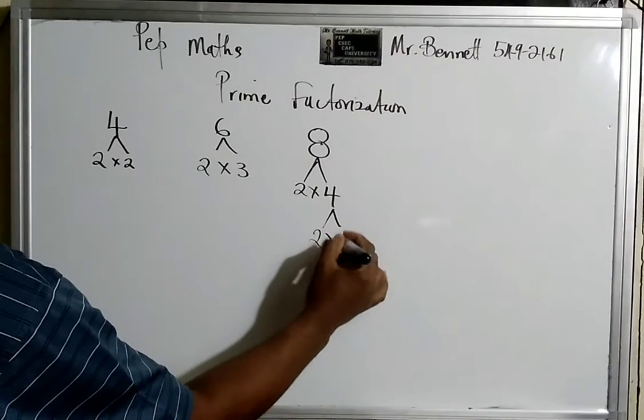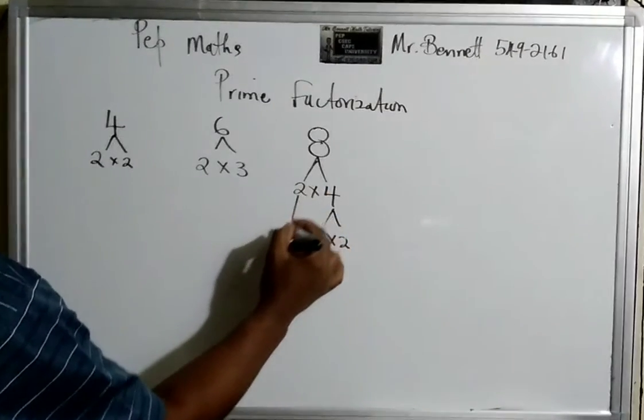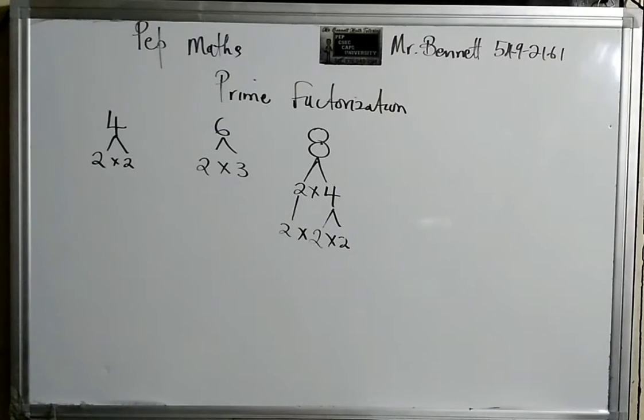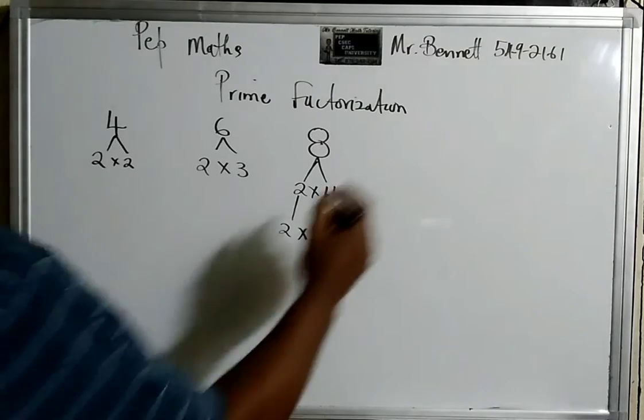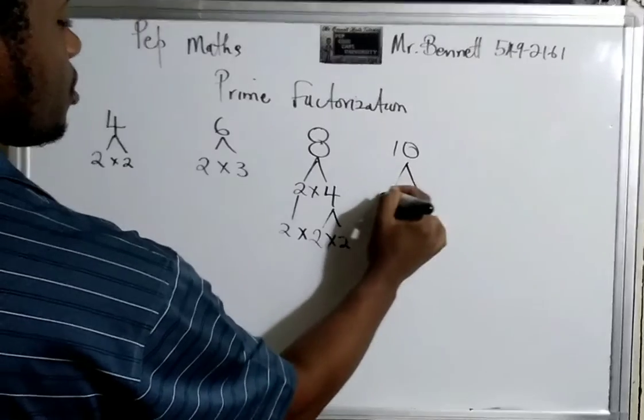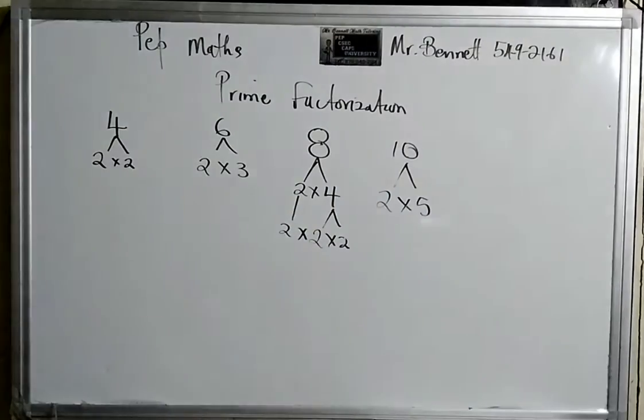Because two times two is four, so we're just putting another one. So the prime factorization of eight would be two times two times two. Let's look at ten, and that will be two times five. All right, let's just look at some more challenging ones.